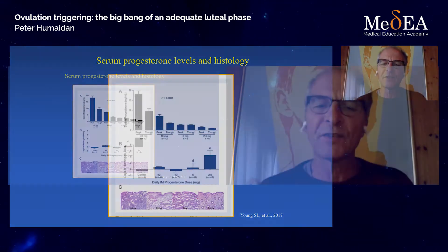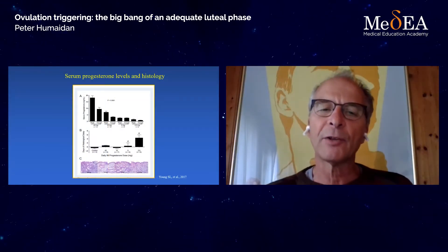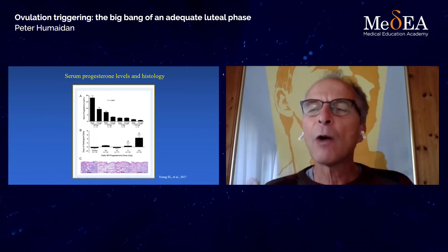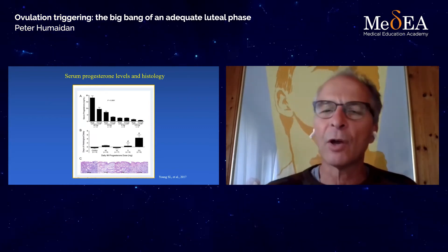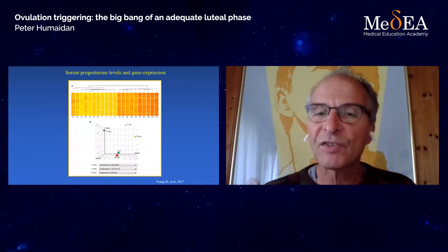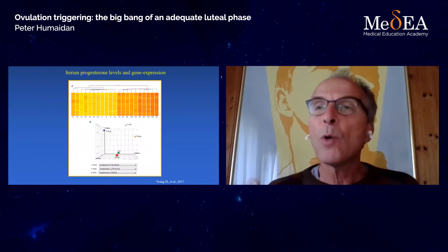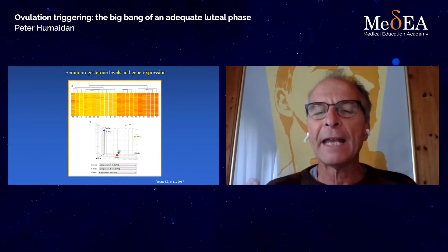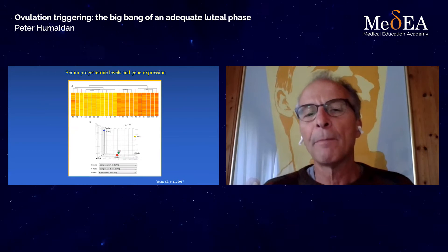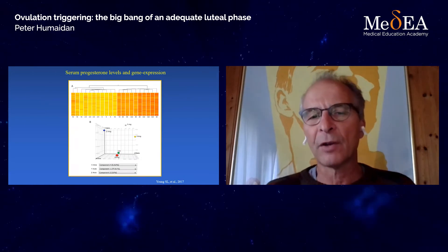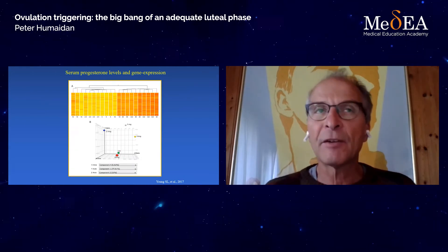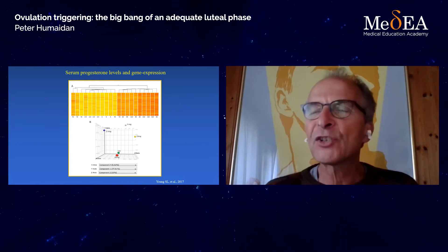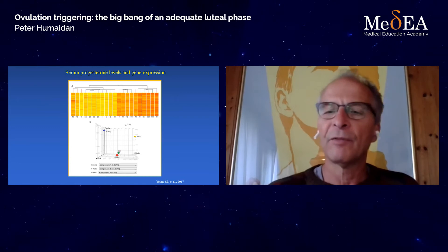Using histology, the histology tells you that all these endometria are receptive. But now in 2020, we have to go into gene expression. If we do so, we can see that only the patient who had the highest circulating progesterone — the 40 milligram dose — had a receptive endometrium comparable to controls. So yes, serum progesterone is a good proxy of gene expression and of endometrial receptivity.